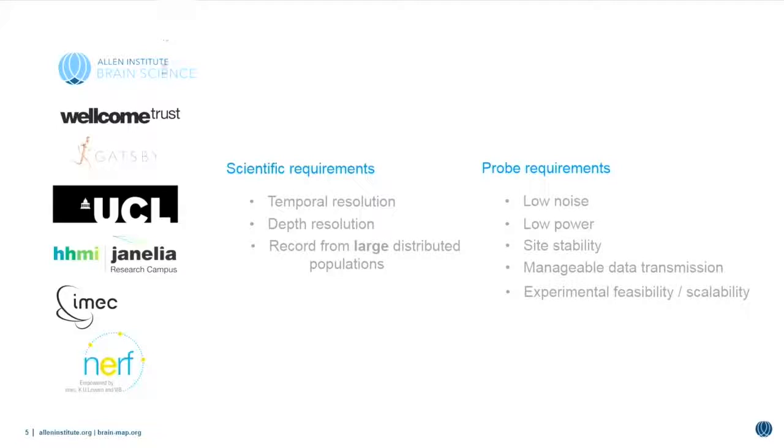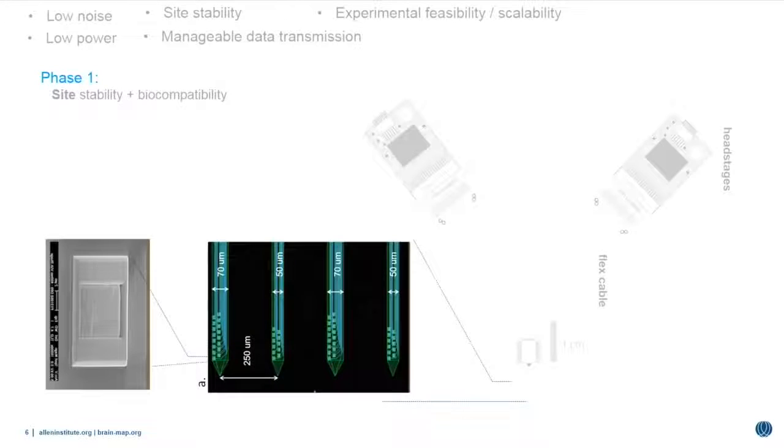We at the Allen Institute are a member of this consortium along with other research and funding institutions, most importantly IMEC, which is a semiconductor foundry in Belgium where these probes are manufactured. I'll go through a brief history of the development and assessment phases of this Neuropixels probe project. In the first phase, we focused just on the individual sites of these electrodes. You can see a diagram of the whole probe and the multi-shanks of this phase one probe where we focused on these sites in the electron micrograph. These are titanium nitride sites. The most important thing was to make sure they had low power and were stable, meaning biocompatible - we can put them in brains and they don't fall apart.